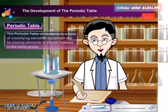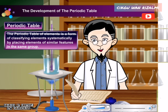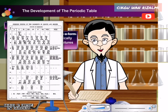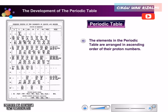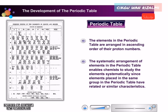The Periodic Table of Elements is a form of classifying elements systematically by placing elements of similar features in the same group. The elements in the Periodic Table are arranged in ascending order of their proton numbers. This systematic arrangement enables chemists to study the elements systematically, since elements placed in the same group have related or similar characteristics.